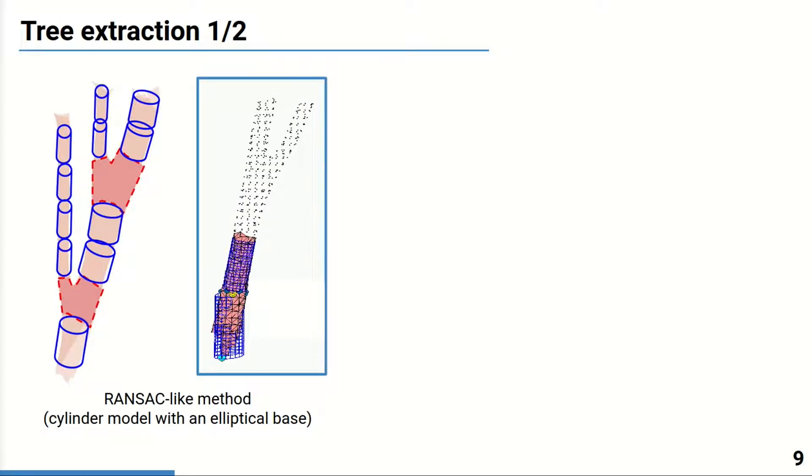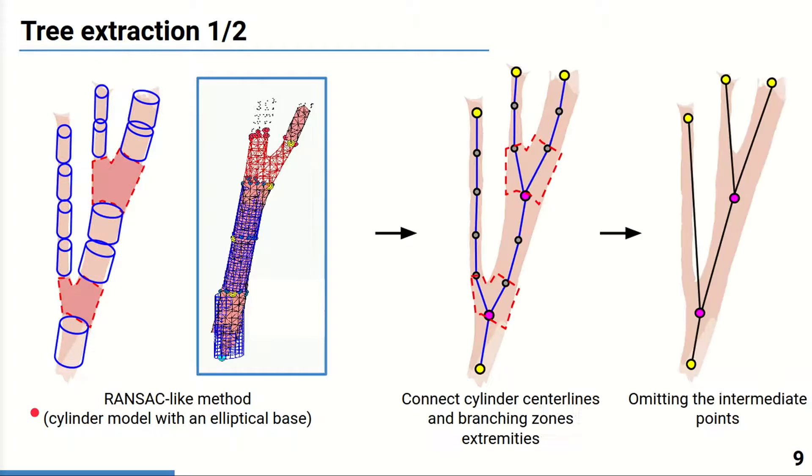We propose to track a chord in the form of a tree of interconnected cylinders and branching zones using a model-fitting RANSAC-like procedure. By a chord, we understand the whole structure originating from the single initial point at a papillary muscle. The resulting tree is then simplified into a set of connected line segments obtained as cylinder centerlines and approximated skeletons of branching zones.